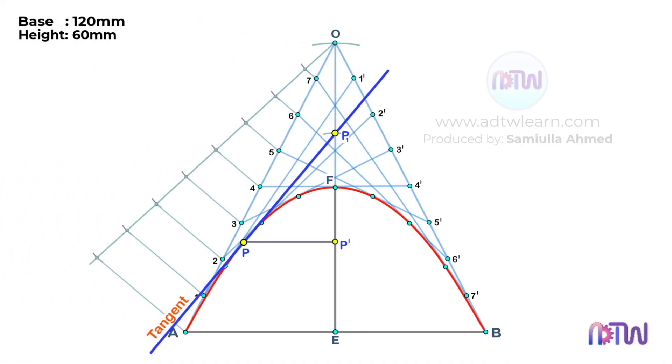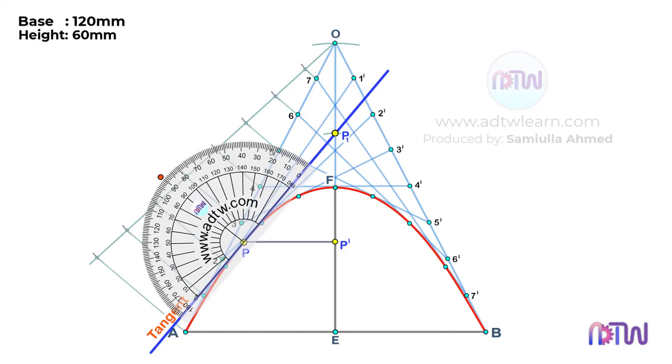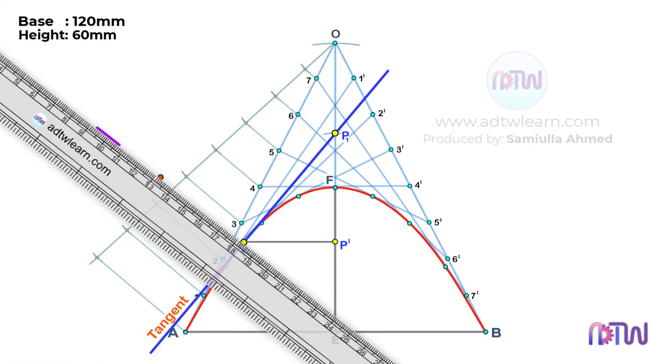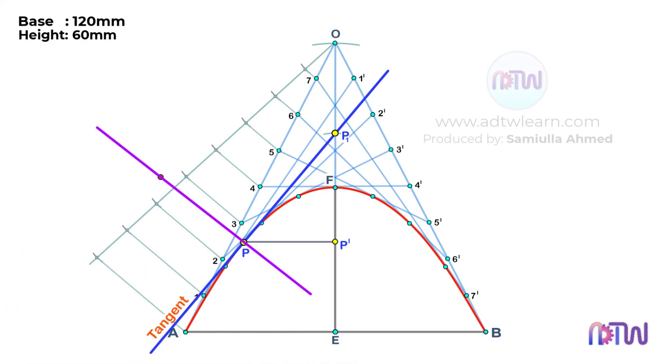Next, draw a line perpendicular to this line at point P. This line is normal to the parabola. At the end do the dimensioning. This is the final parabola.